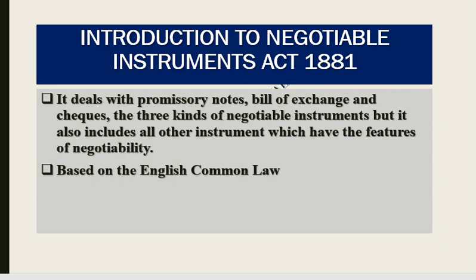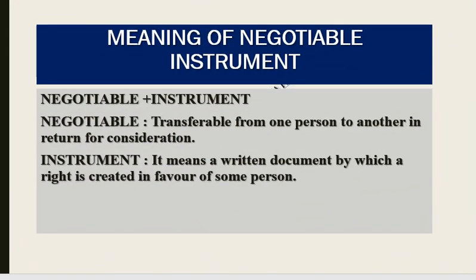The negotiable instrument act is based on English common law. The term negotiable instrument is based on two words: negotiable and instrument. Negotiable means that it can be transferred — like one person transfers a cheque to another person. It is transferable from one person to another in return for consideration. Instrument means a written document by which a right is created in favor of some person.